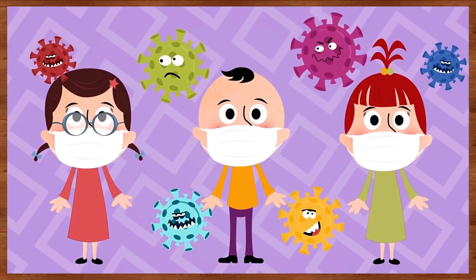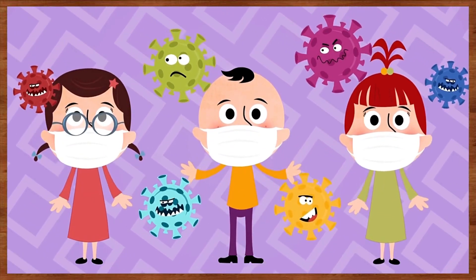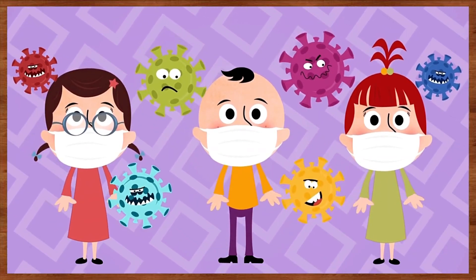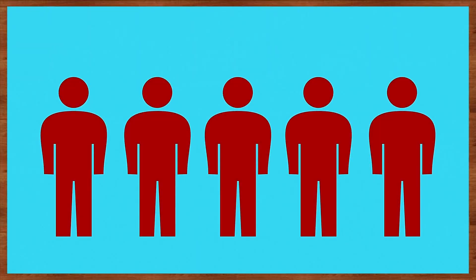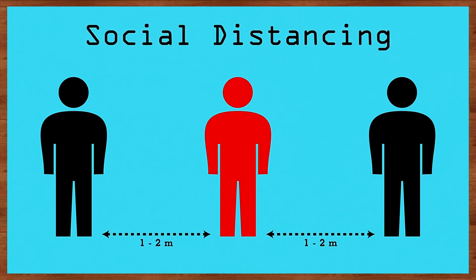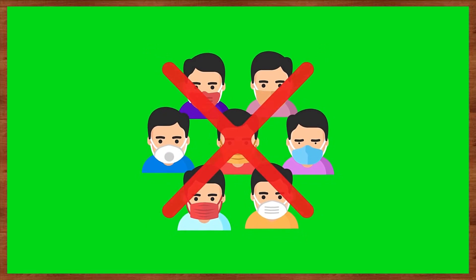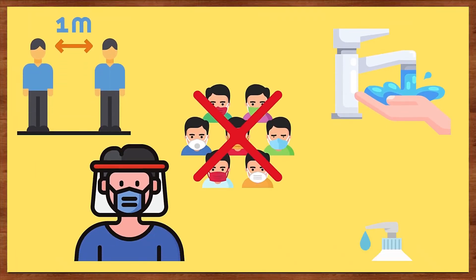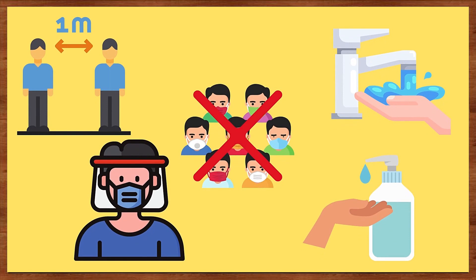Due to the new normal situation brought by the pandemic, we commonly hear the words Social Distancing or Physical Distancing. This means we keep a distance of at least 1 meter from each other and avoid spending time in crowded places or in groups. Aside from wearing face masks, face shields, and washing hands, these are the minimum safety protocol standards imposed by the Interagency Task Force or IATF to limit the speed of spread of COVID-19 transmission.